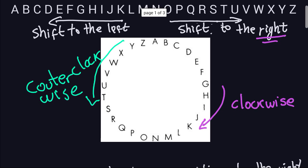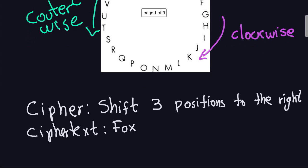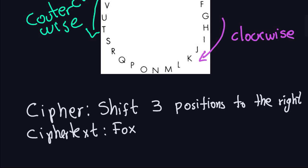So remember from the previous example what we had. The cipher was shift three positions to the right, which in this case corresponds to moving in the circular arrangement of letters clockwise. And the cipher text that you remember from the last video, it was Fox.